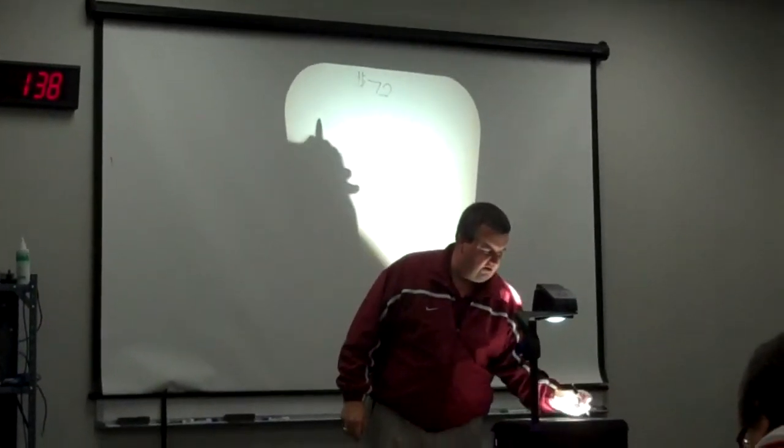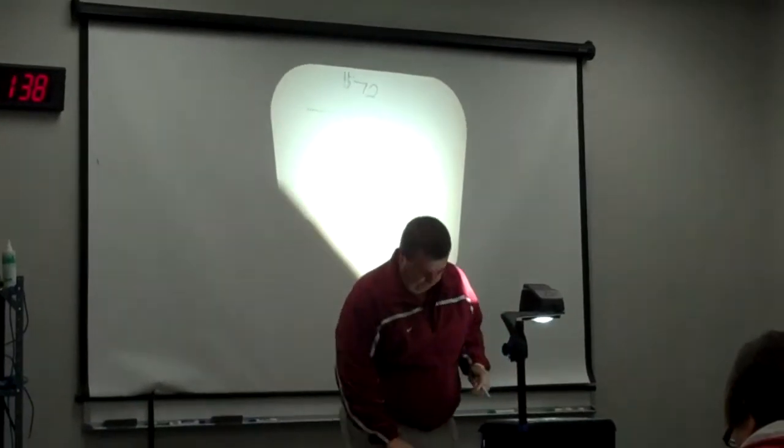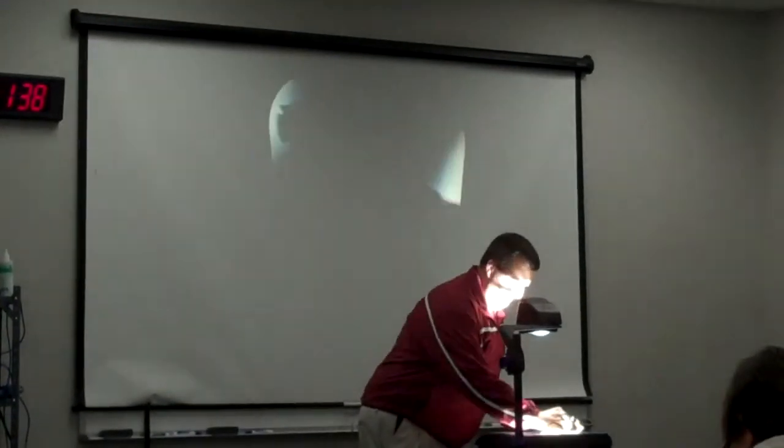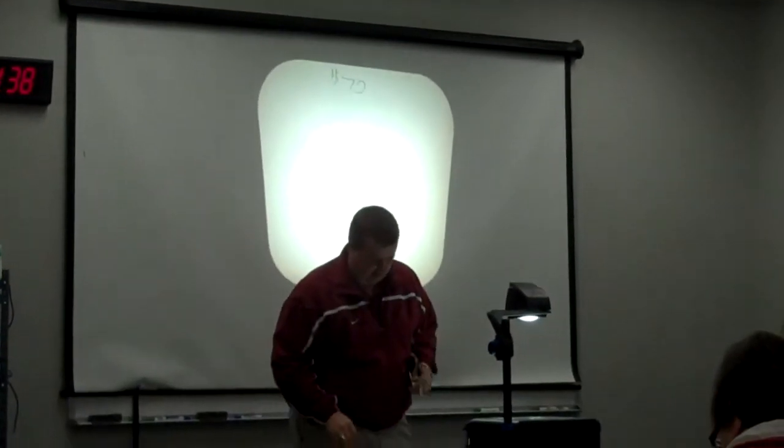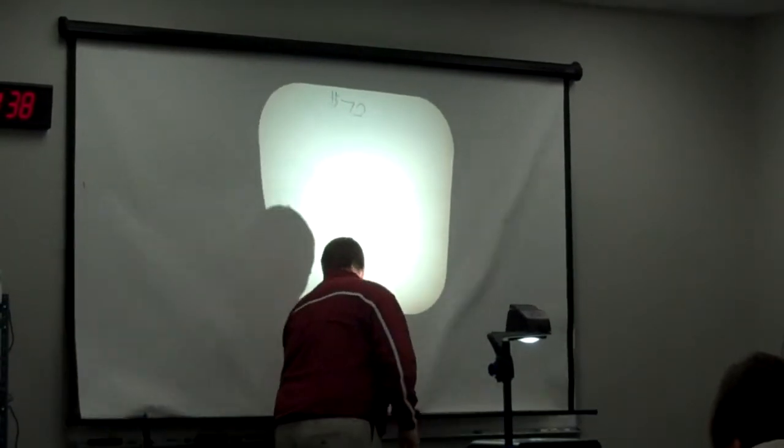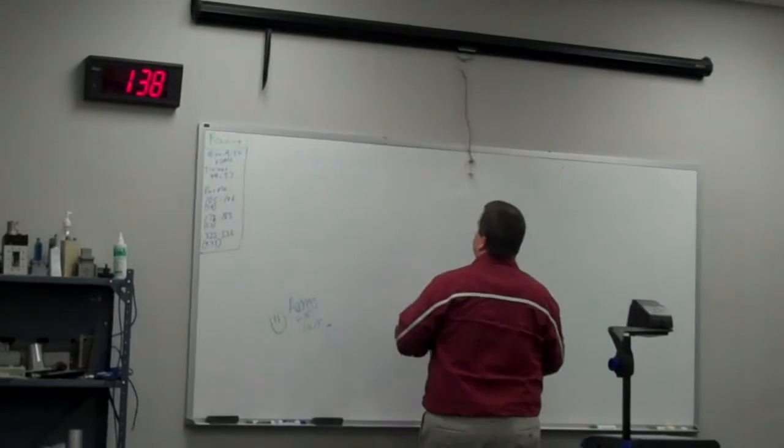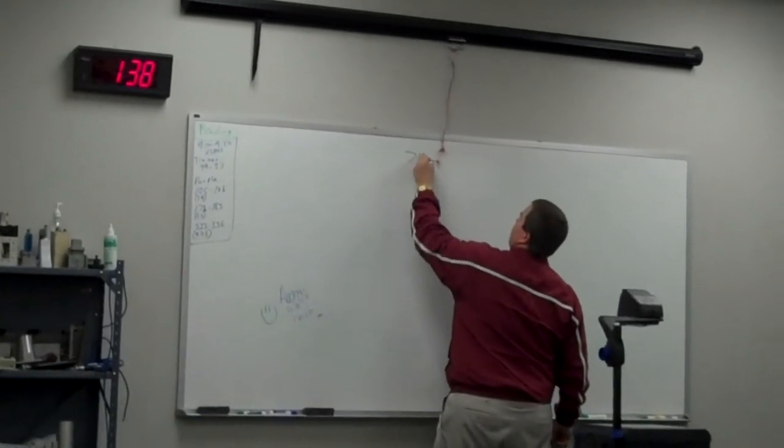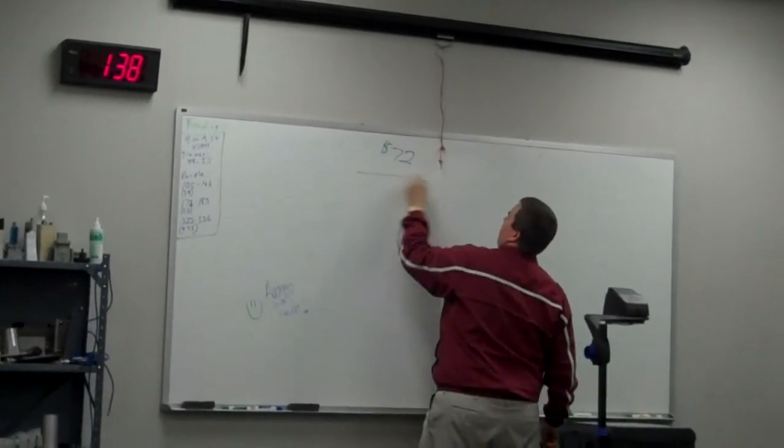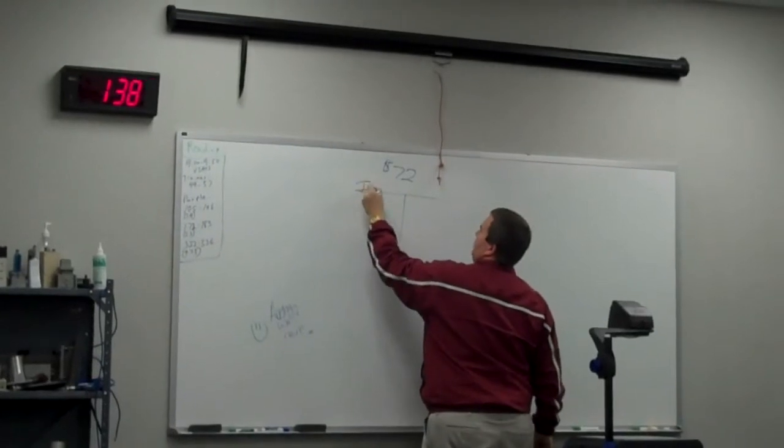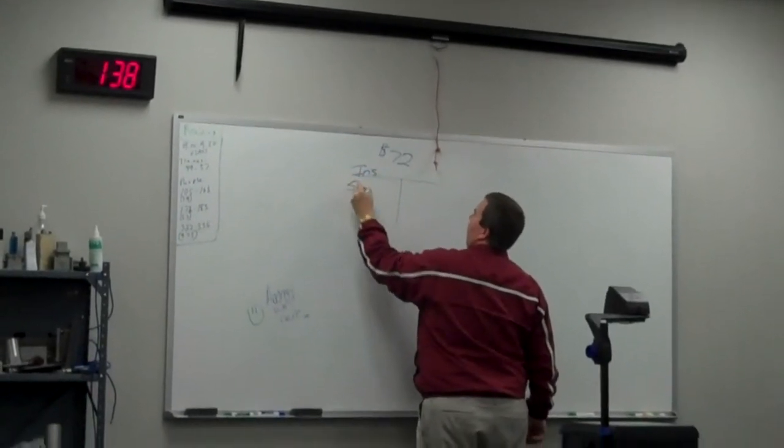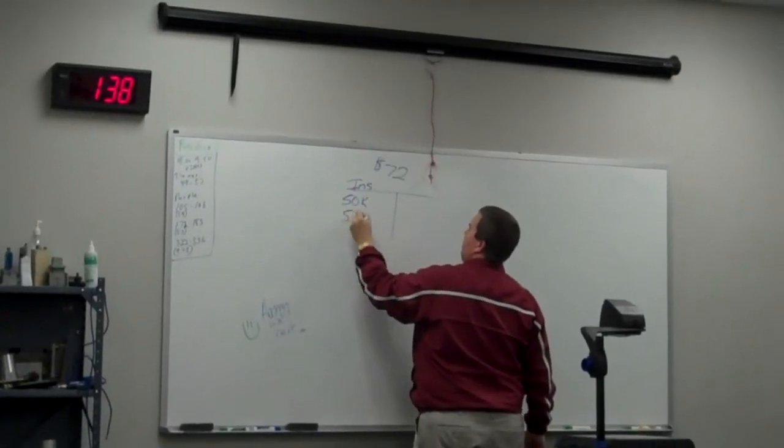So $72 a month. He says, Mick and Jody, for $72 a month, here's what we can give you. We can give you $50,000 of insurance each.